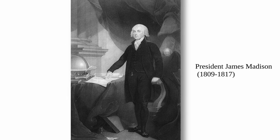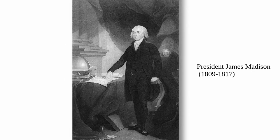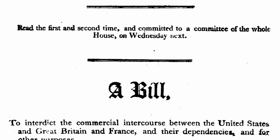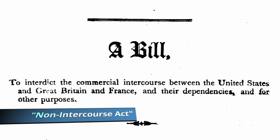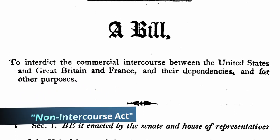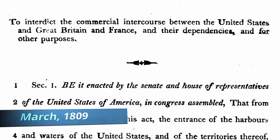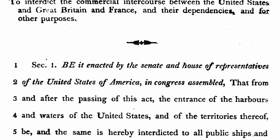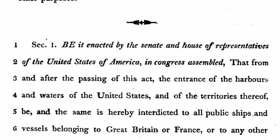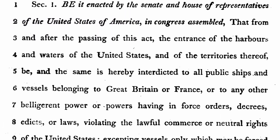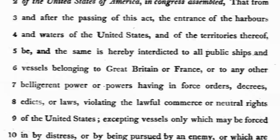In response to both the trade restrictions and impressment, the U.S. government tried a series of unsuccessful economic acts, including the Non-Intercourse Act and Macon's Bill, to attempt to force France and Britain to relent. These measures proved largely unsuccessful, while crippling the U.S. economy.